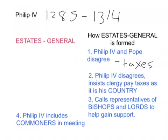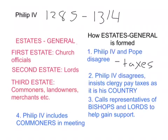This is the beginning of the Estates General being divided into three different sections, or estates. The first estate was made up of church officials, the second estate of lords, and the third estate of commoners, landowners, merchants, and so on. This structure is a significant difference from the English parliament system.